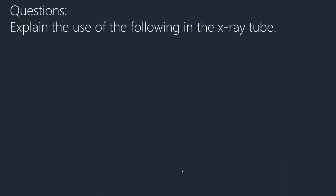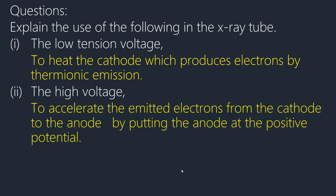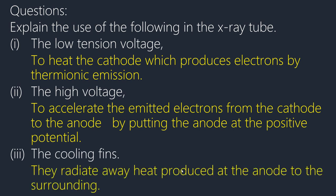Question: explain the use of the following in an X-ray tube. Roman 1 — the low tension voltage: it heats up the cathode, which produces electrons by thermionic emission. Roman 2 — the high voltage supply: it accelerates the emitted electrons from the cathode to the anode by putting the anode at a positive potential. Lastly — cooling fins: they radiate away the heat produced at the anode to the surrounding.